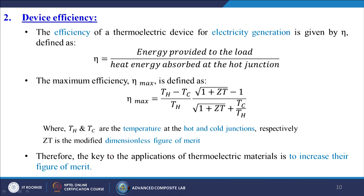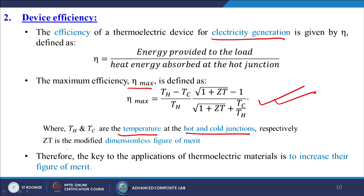The second criterion is device efficiency. The efficiency of a thermoelectric device for electricity generation is given by η, defined as energy provided to the load divided by heat energy absorbed at the hot junction. The maximum efficiency ηmax is defined by an equation where Th and Tc are the temperatures at the hot and cold junctions respectively and ZT is the modified dimensionless figure of merit. Therefore, the key is to increase the figure of merit.